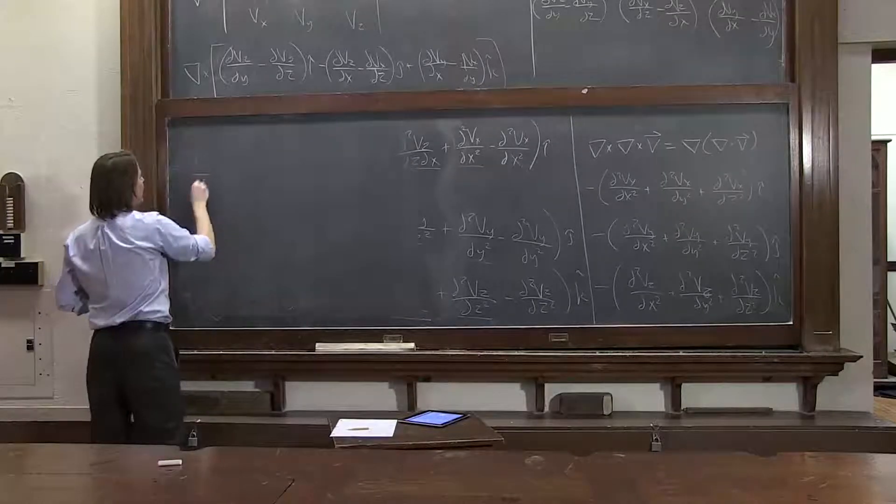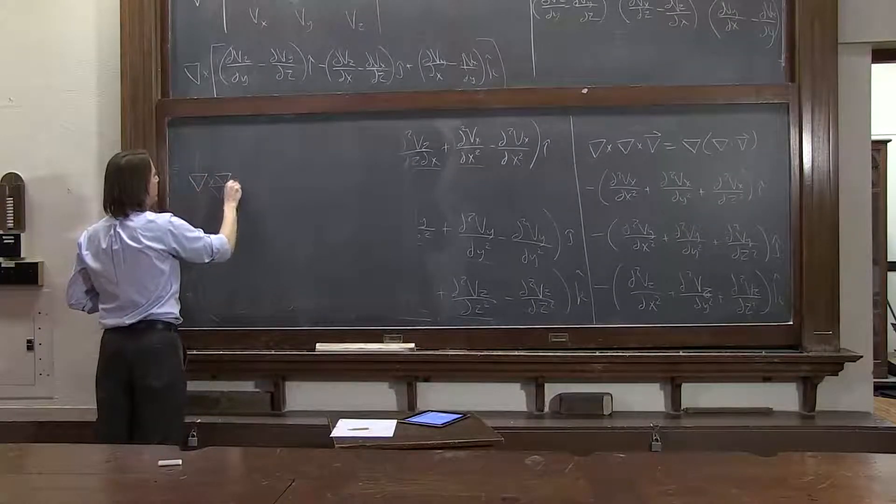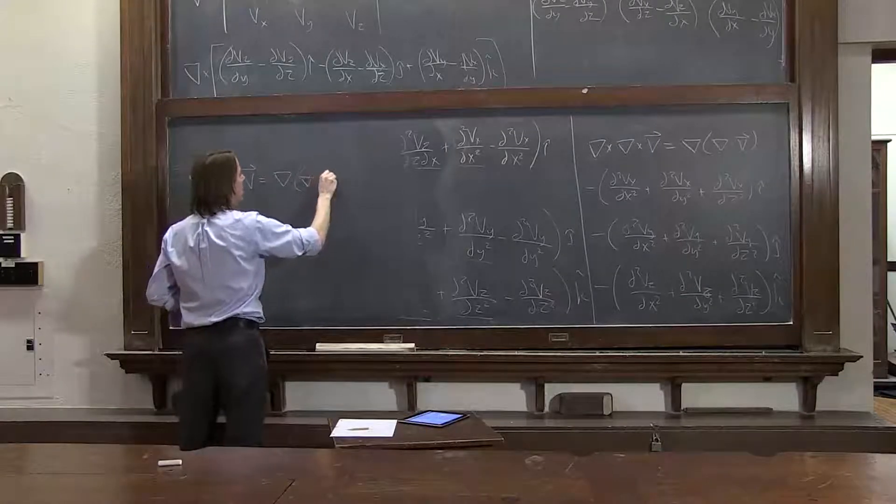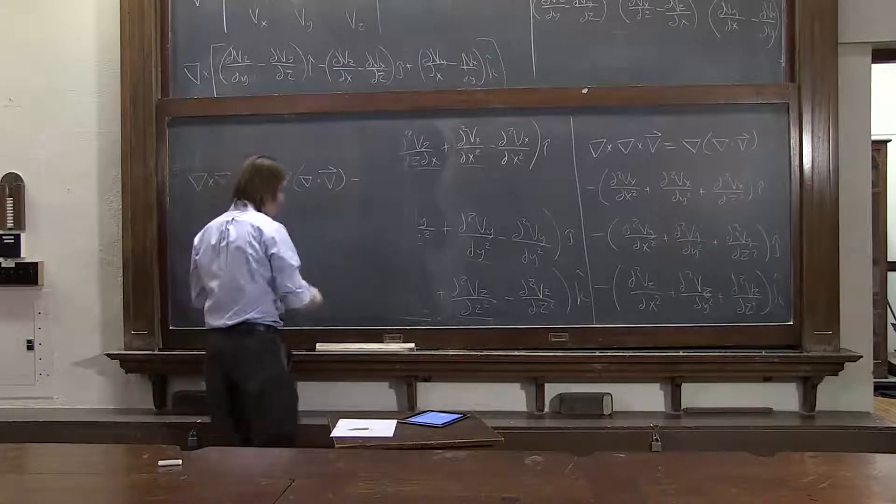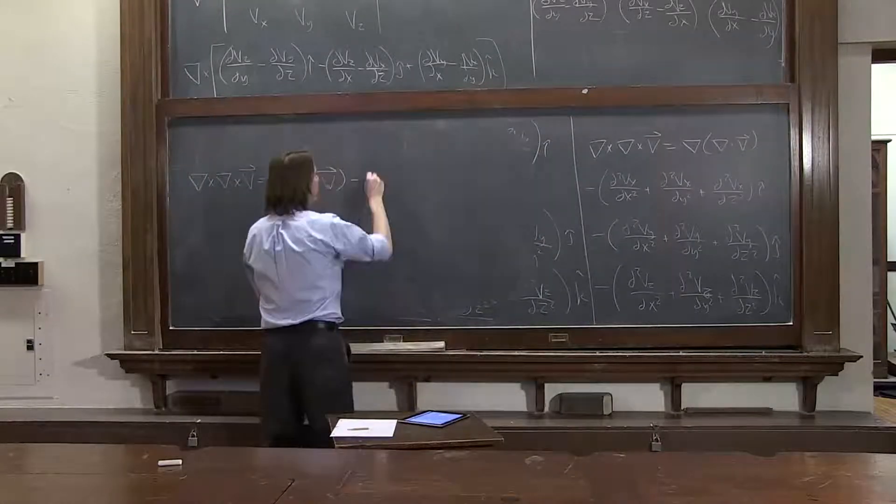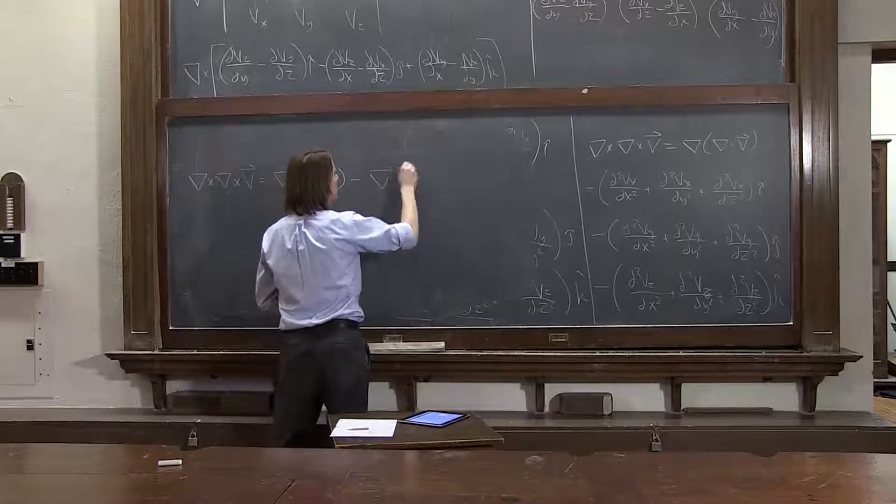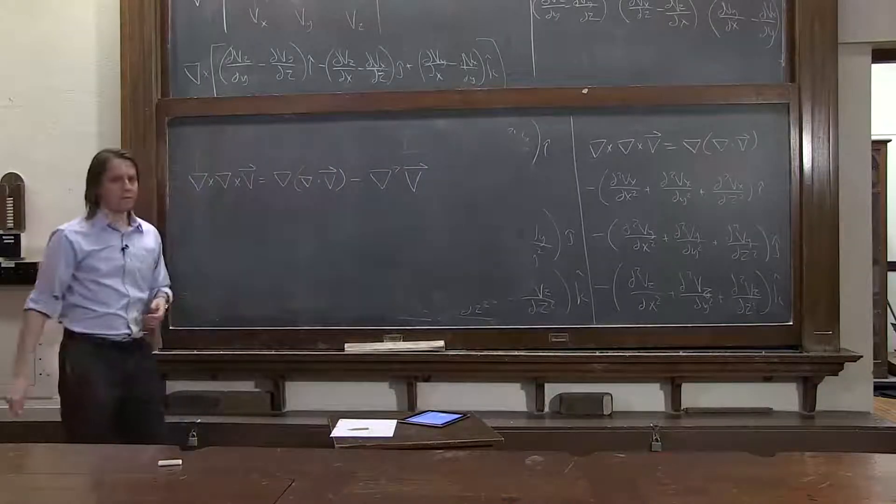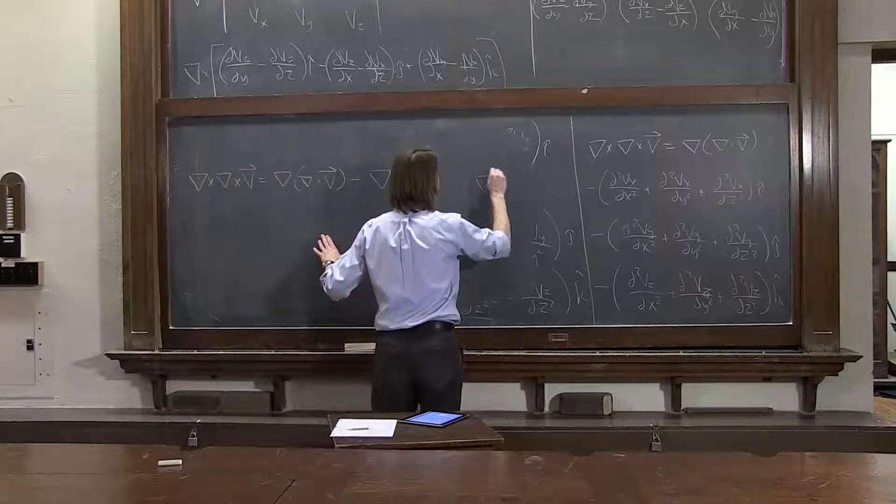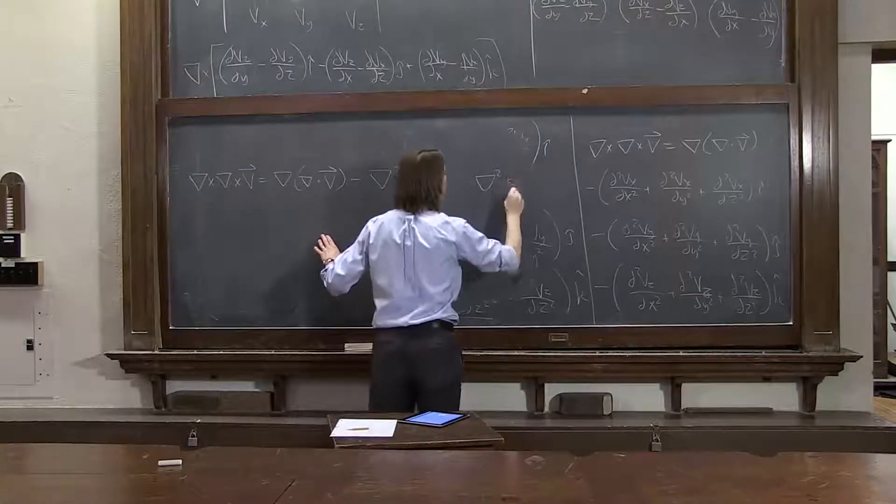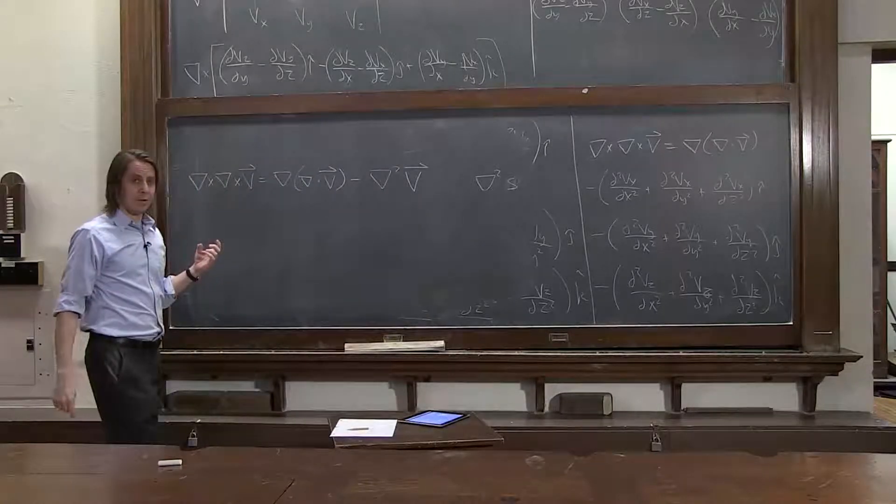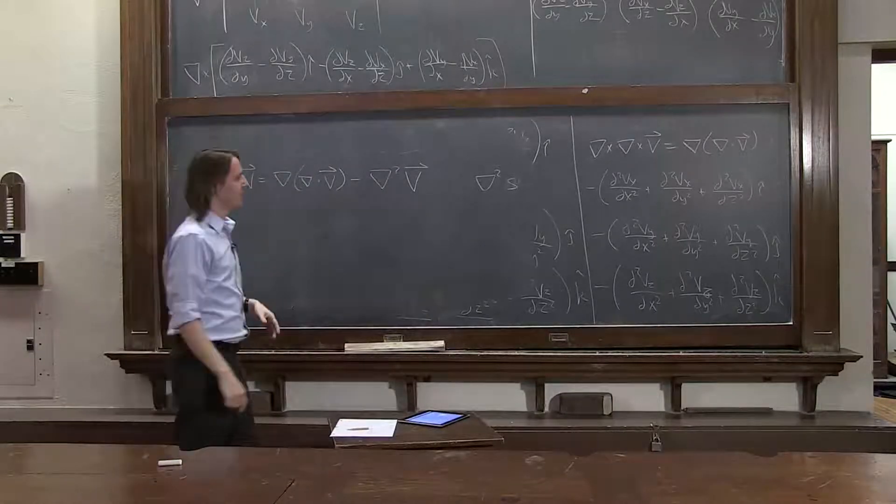We call it the vector Laplacian. So del cross del cross v is equal to the gradient of the divergence minus del squared of the vector field. So remember the Laplacian? Before, one of the derivatives was the Laplacian del squared of a scalar field, S. That was the divergence of the gradient.